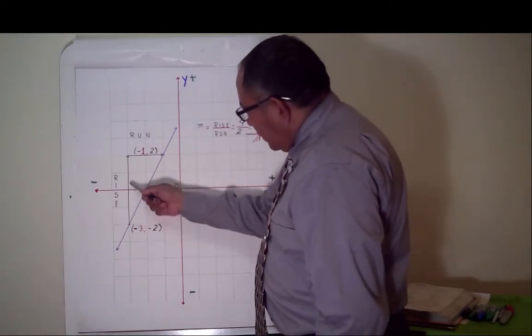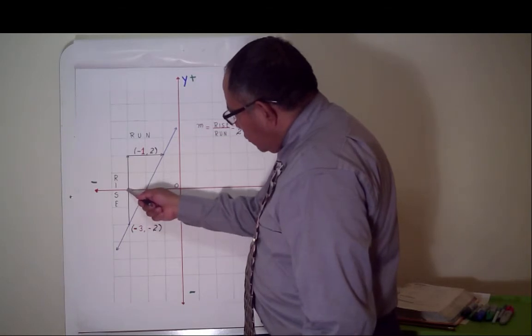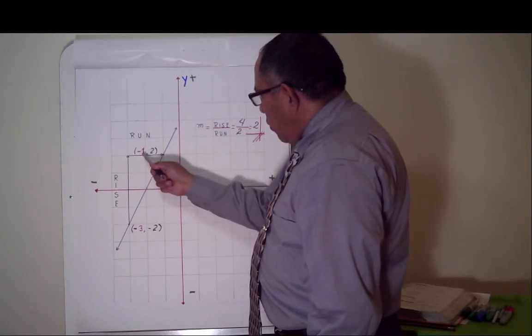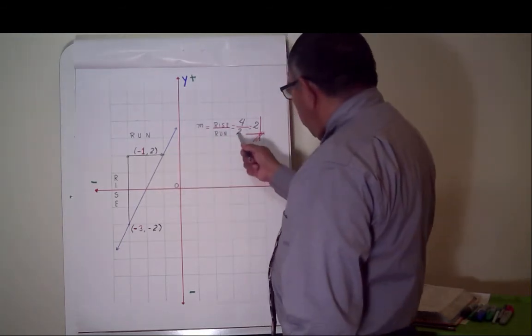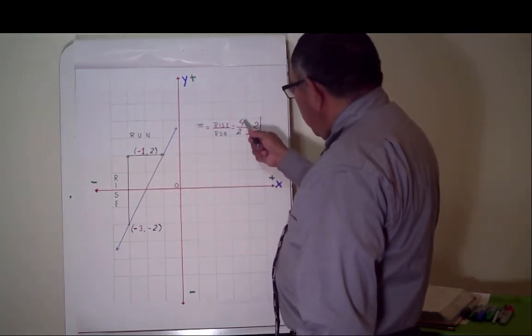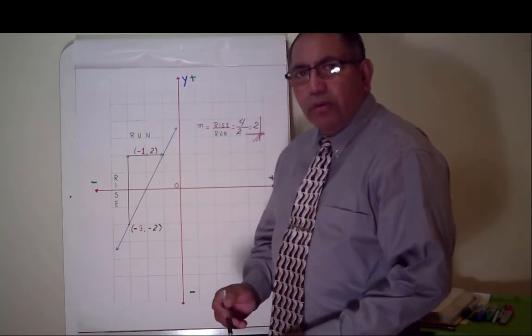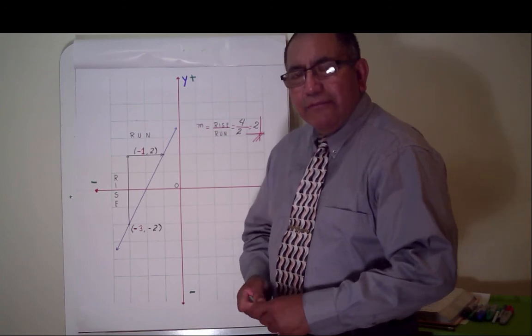Four divided by two. Rise: one, two, three, four, positive. Run: one, two, positive. Four divided by two is two. This is the slope of that line.